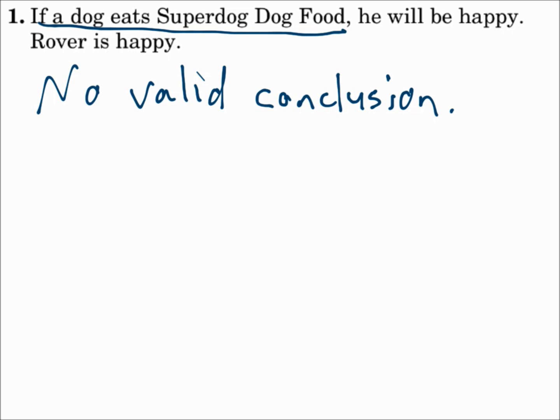What we have here is statement P, eating the dog food, leads to statement Q, being happy. And then they get specific with Q, and say Rover is happy, but there is no statement R. This isn't even close to syllogism.